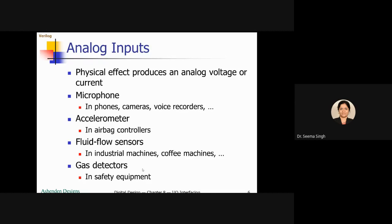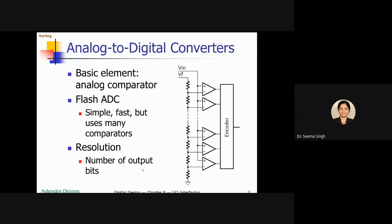To summarize analog inputs covered: keypad, positional encoder (knob), microphone, accelerometer, fluid flow sensor, and gas detector. Since all these analog inputs are in analog form, we need methods to convert them to digital form. There are two methods to study: Flash ADC and Successive Approximation ADC.